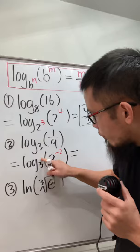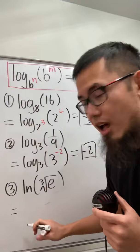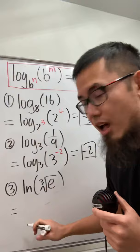Lastly, ln is the same as log base e because that's a natural log, and then the cube root is the 1 third power, so this is e to the 1 third power. Well, 1 over 3 divided by 1 is just 1 third. Done.